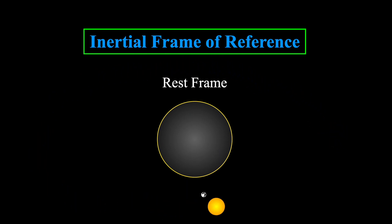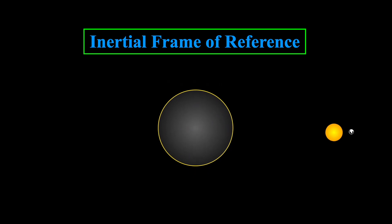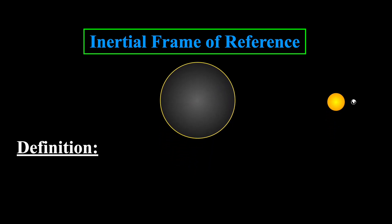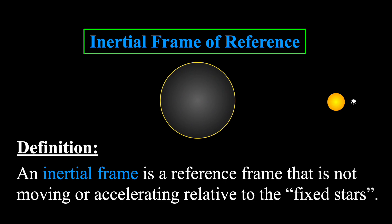This is why in certain textbooks, you might see another definition of an inertial frame of reference as something that is not rotating or accelerating with respect to the fixed stars. But, even this is imperfect, since the fixed stars also move around the center of the galaxy, while the galaxy collectively moves towards the nearest neighbor galaxy, Andromeda.